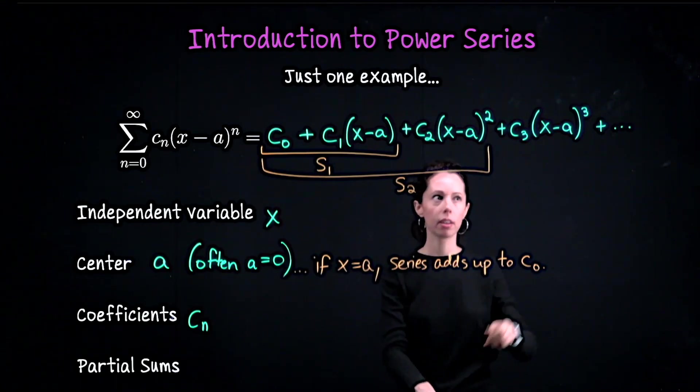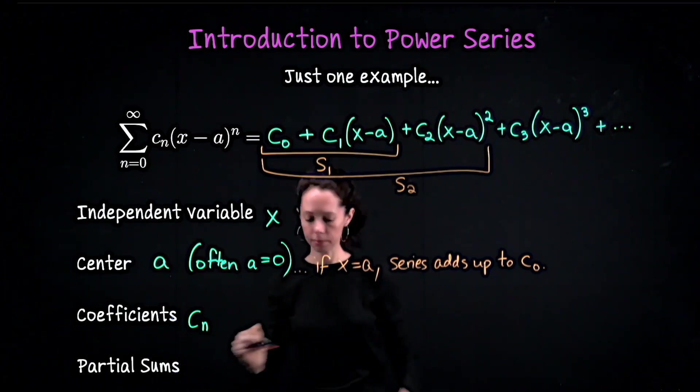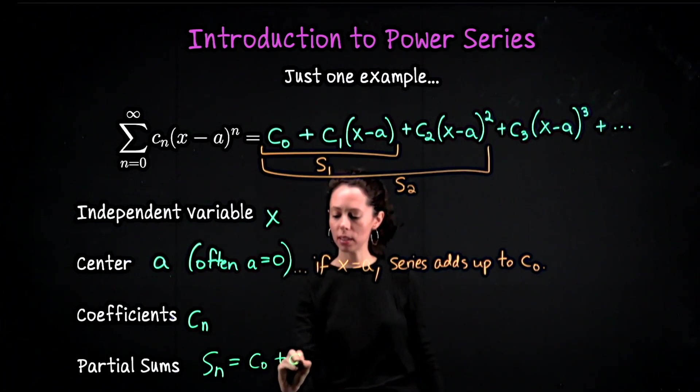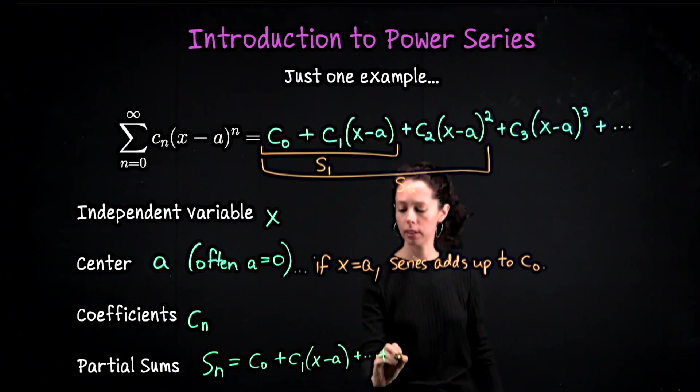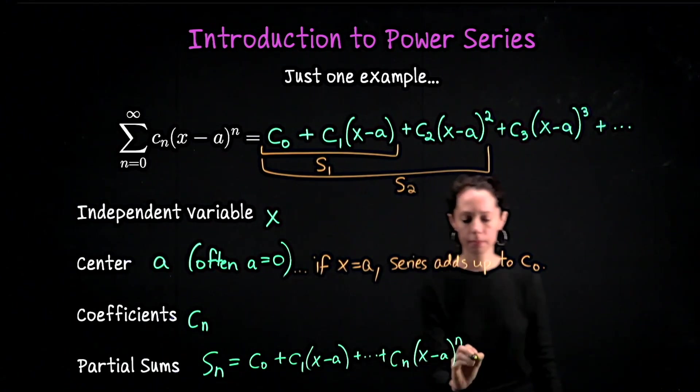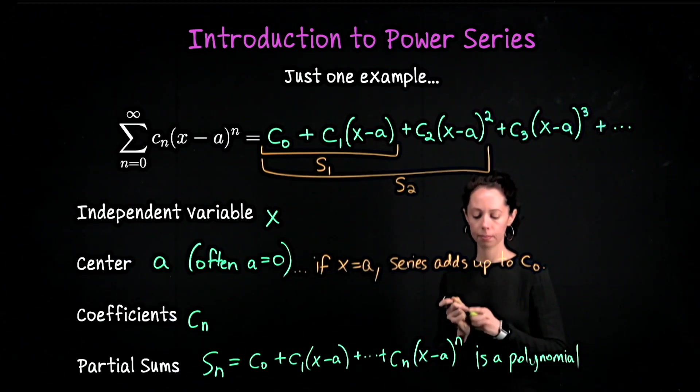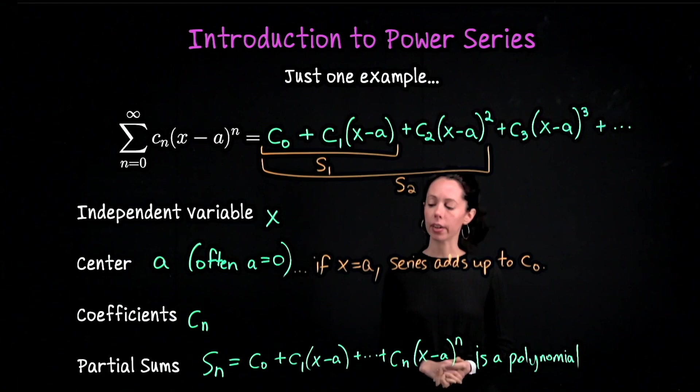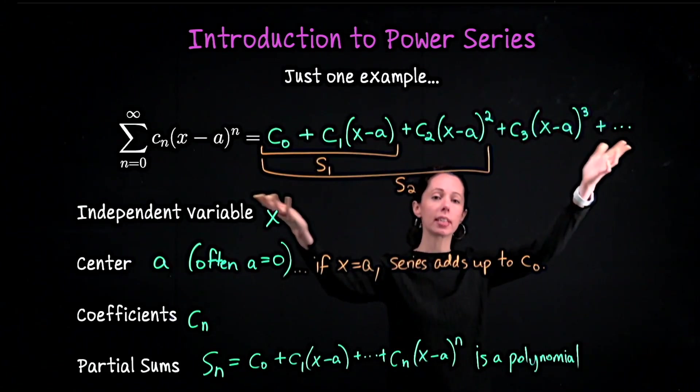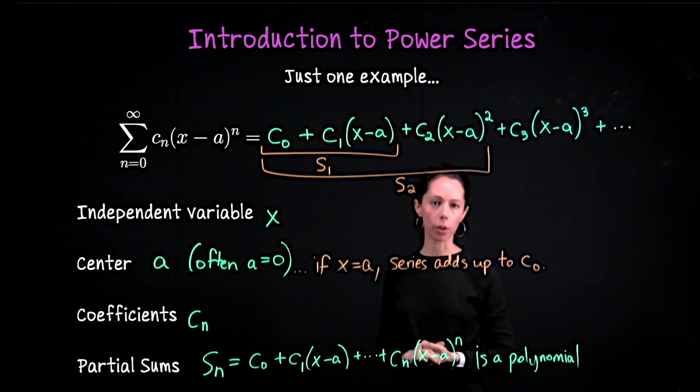If I just took that third partial sum, it's a cubic polynomial. So if you wrote down s_n as c_0 plus c_1 times (x - a) all the way through c_n times (x - a) to the n, you could think of this as a function of x and in fact it's a polynomial. So partial sums for any given power series look like polynomials. Now assuming that this sum goes on forever, so that I always have more terms to add, the power series itself is not a polynomial. But the partial sums are polynomials.